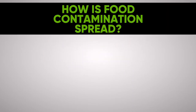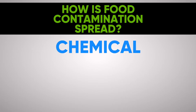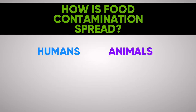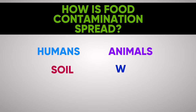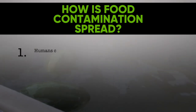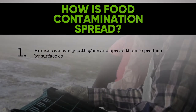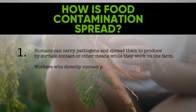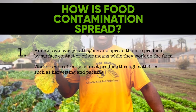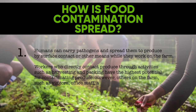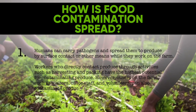How is food contamination spread? We have identified the three types of food safety hazards — chemical, biological, and physical. These hazards can be caused by five contamination sources: humans, animals, soil, water, and buildings, equipment, and tools. 1. Humans can carry pathogens and spread them to produce by surface contact or other means while they work on the farm. Workers who directly contact produce through activities such as harvesting and packing have the highest potential for contaminating produce. However, others on the farm such as visitors, office staff, and volunteers can also contaminate produce.